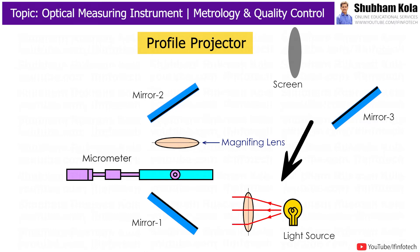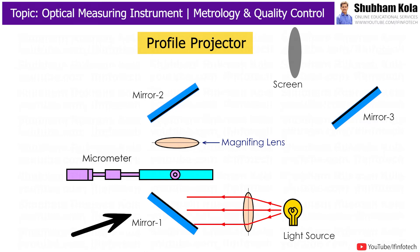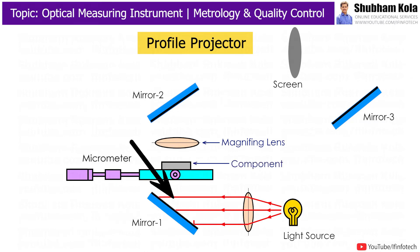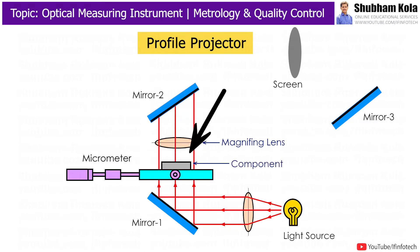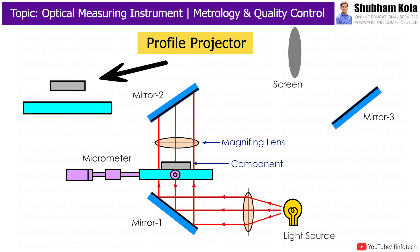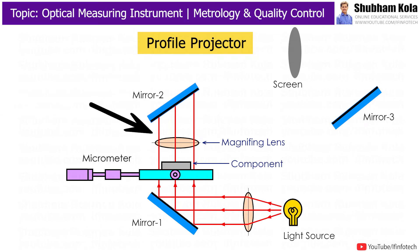The light source incidents light on a mirror to create the profile of the component. The table is made up of glass on which the component can be mounted. Magnifying lenses are used to magnify the image of the component, and the magnification of up to 10x to 500x is possible.